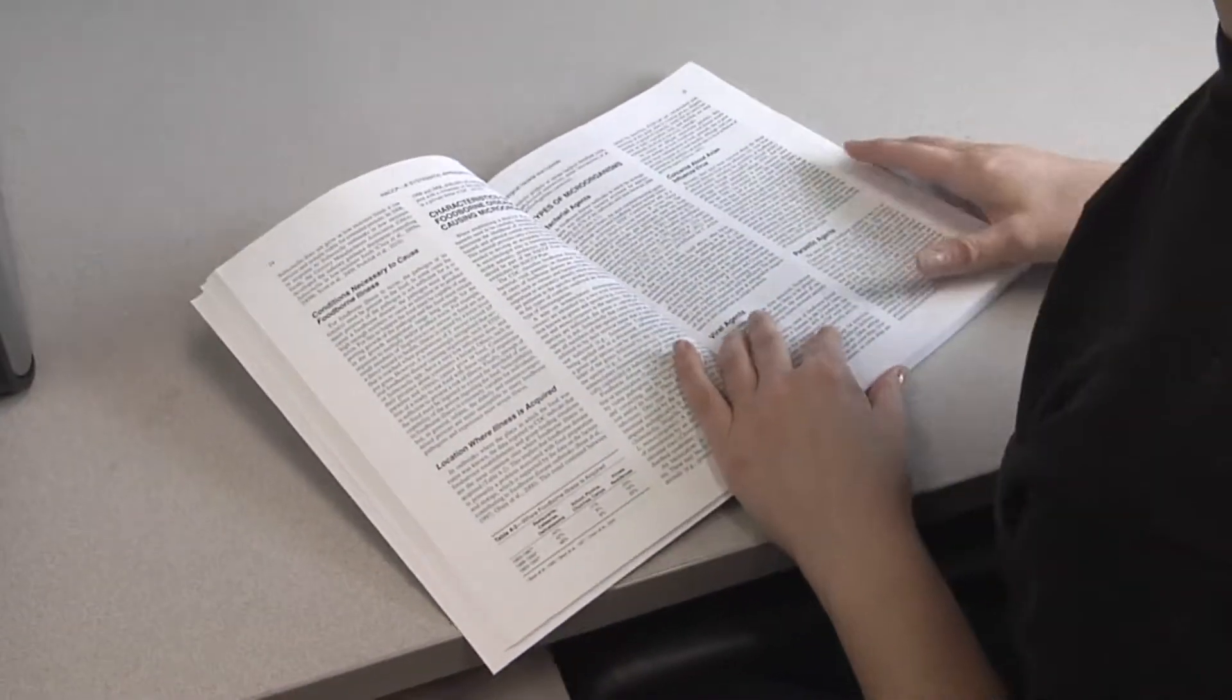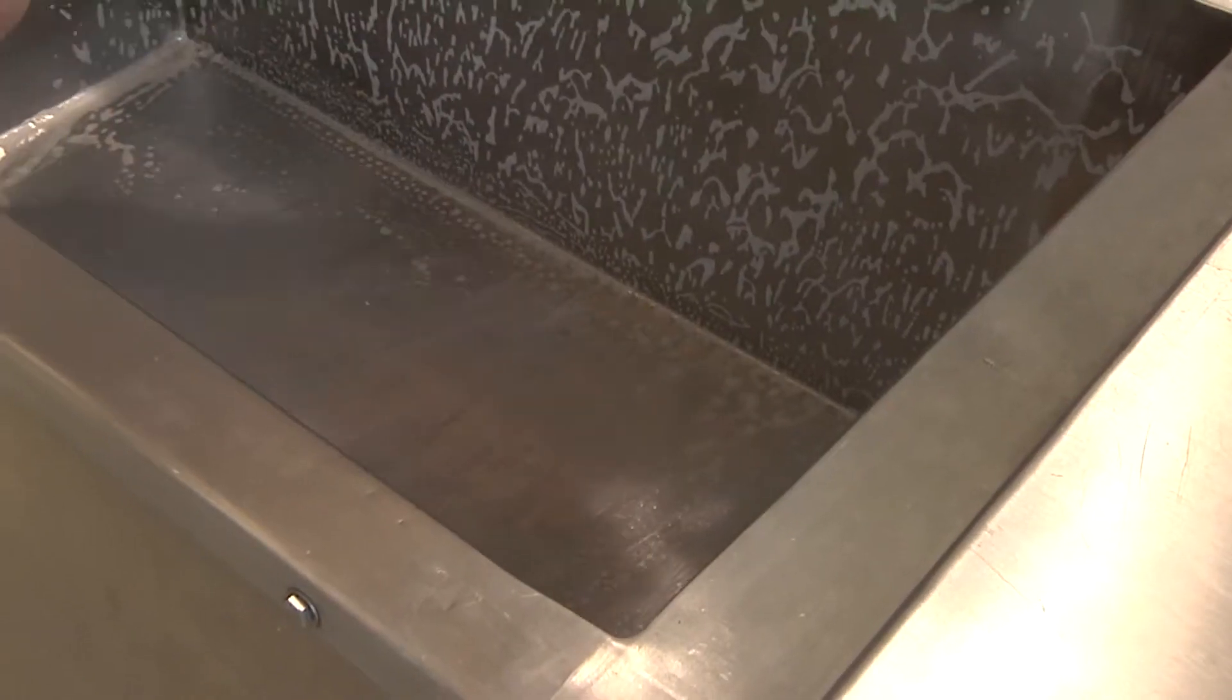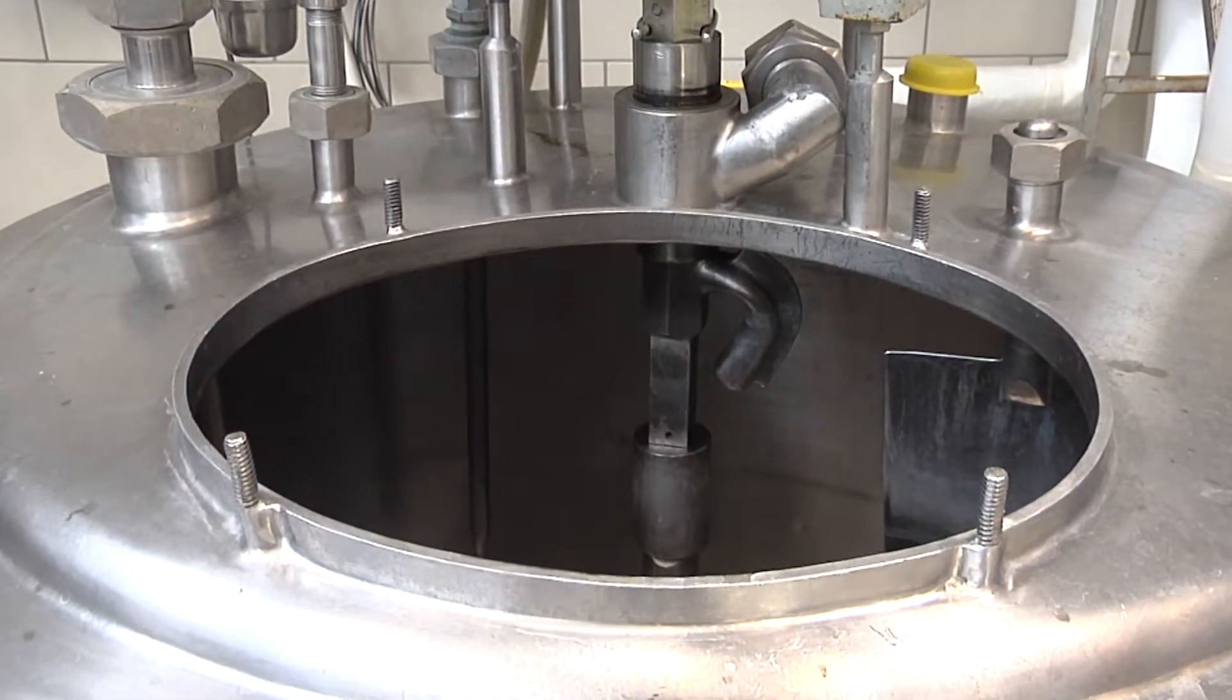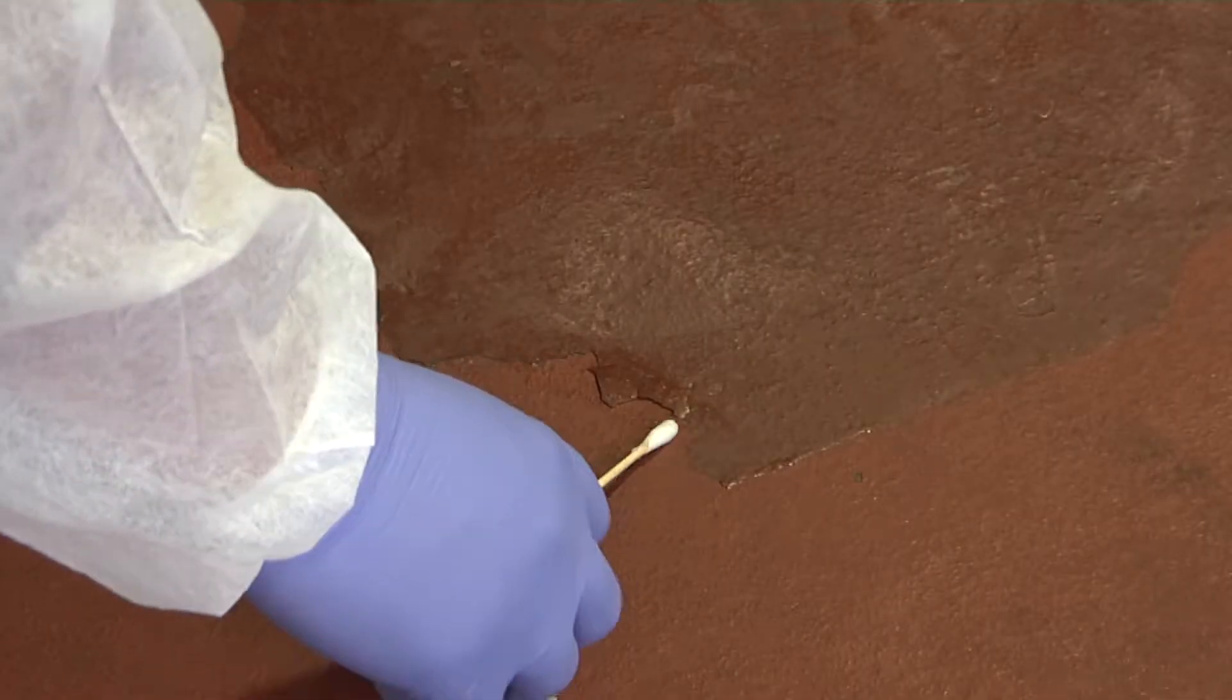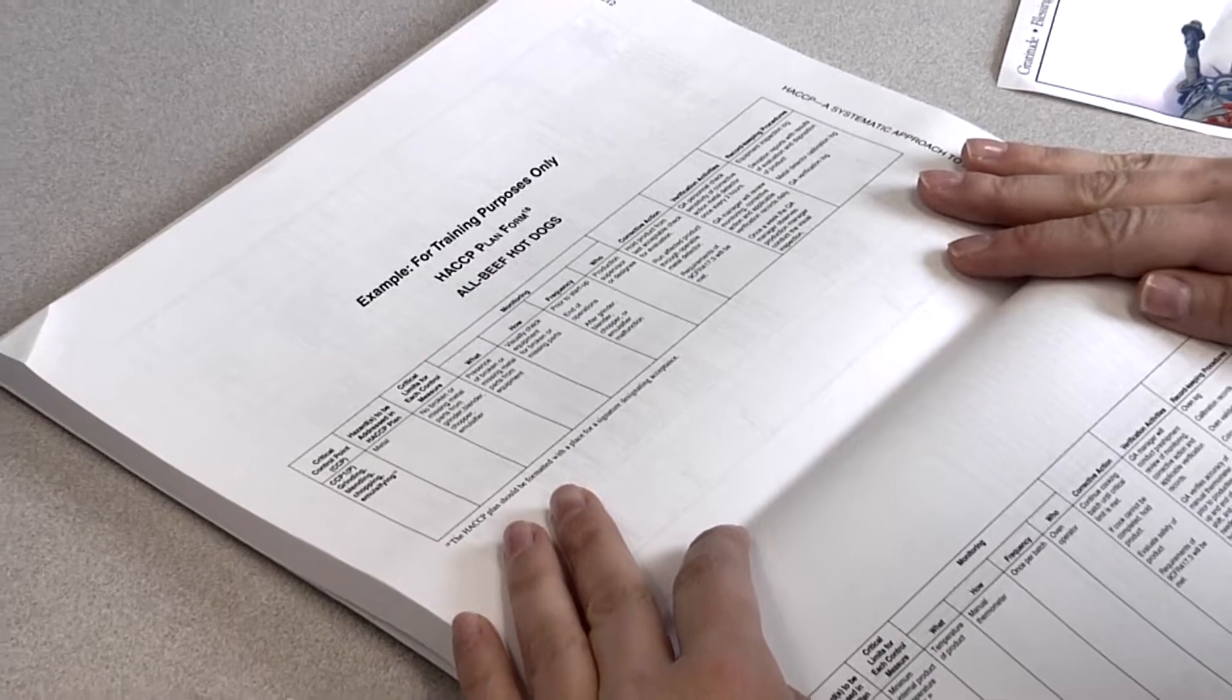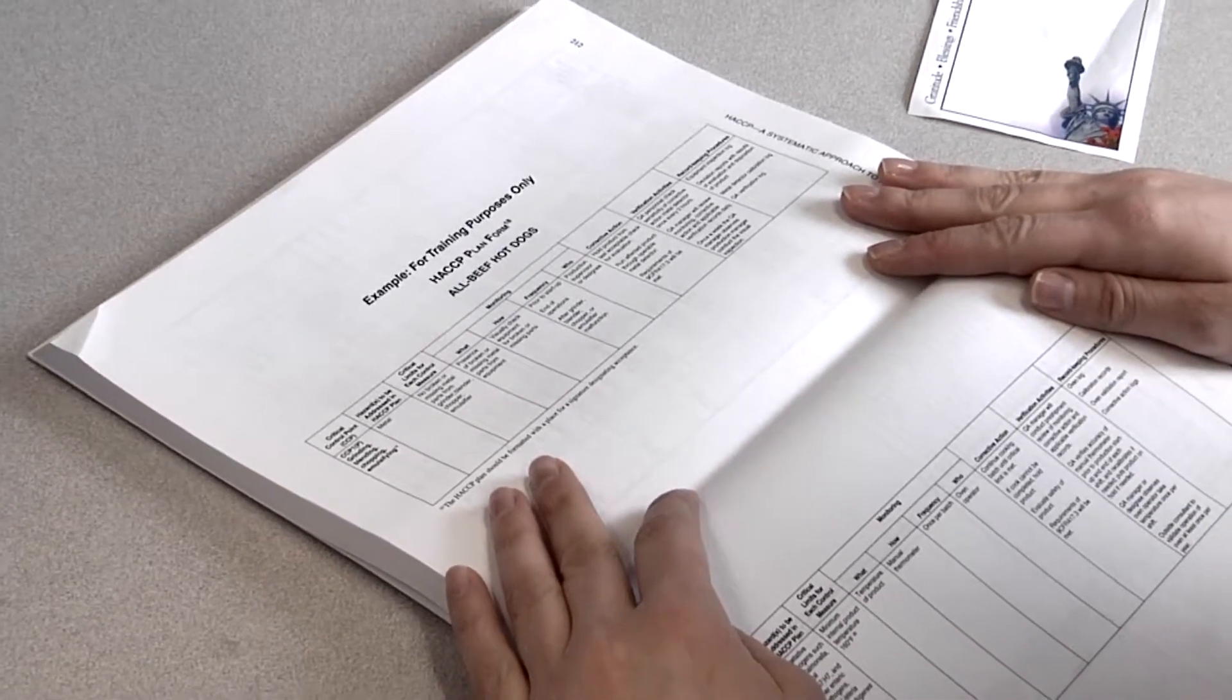To determine whether a processing environment has been properly cleaned, as well as to tell whether pathogens are present, environmental testing is conducted. It is considered a verification procedure as part of a company's HACCP plan for sanitation, as well as Listeria control.